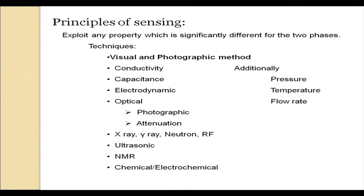For macro systems there are several different ways of sensing flow regimes. The most reliable - and oldest - techniques are visualization and photographic techniques. A very common way to detect the distribution of flow patterns as well as estimate void fraction is to exploit any particular physical property which is different for the two phases. This can be a difference in electrical impedance, electrical conductivity, or capacitance of the two phases. For air-water systems, conductivity probes are widely used in macro systems.